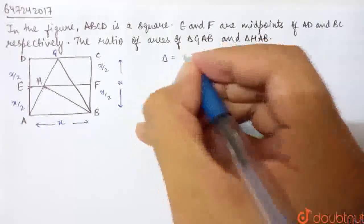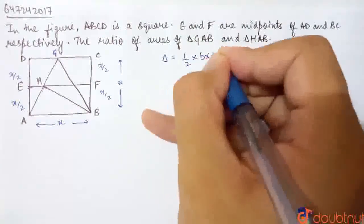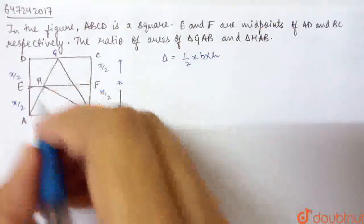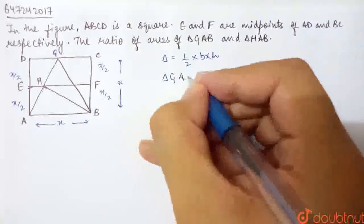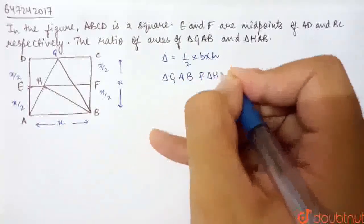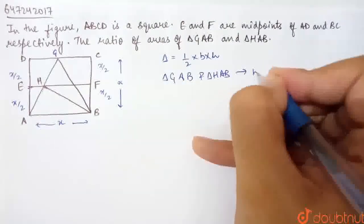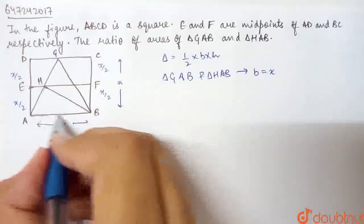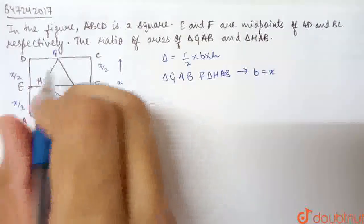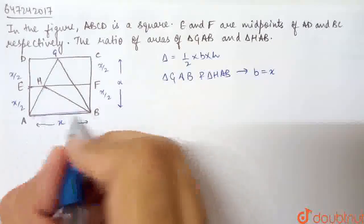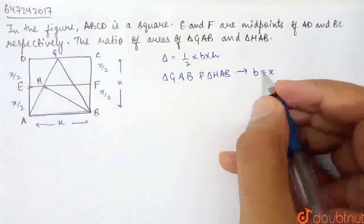What is the area of a triangle? The area of a triangle is half of base times height. So if I look at triangle GAB and triangle HAB, the base of both of these is equal to X. This is the base of both triangles. So B equals X.